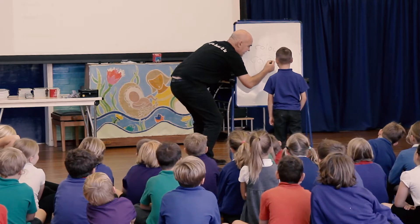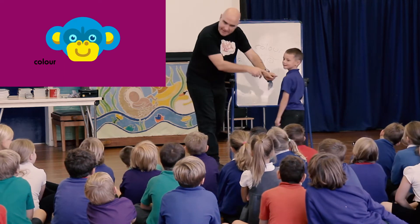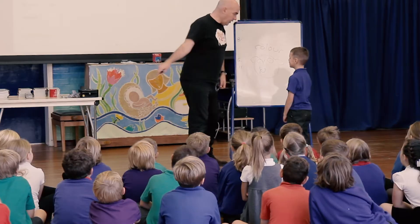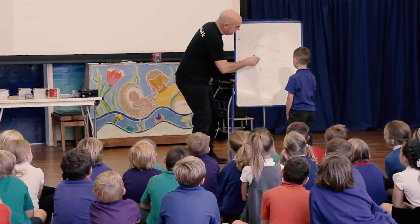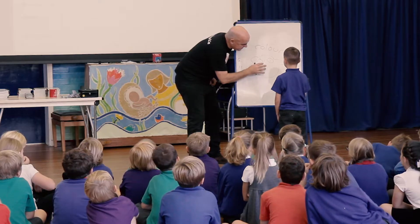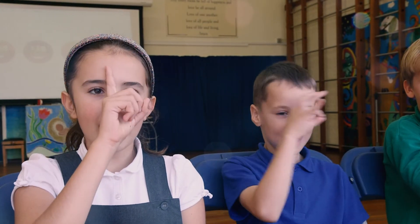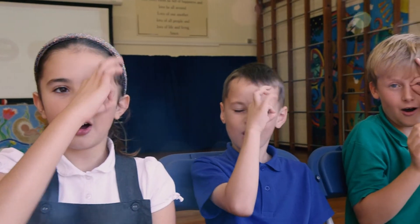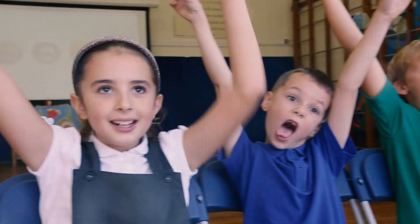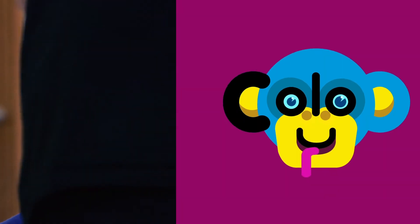This is a crazy monkey. No, not him — this one. So Ted, what letters can you see on this crazy monkey's face that are in the word 'colour' — C-O-L-O-U-R? C-O-L-O-U-R. Give him a clap!